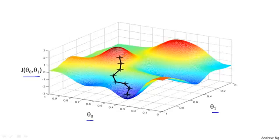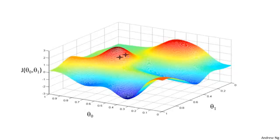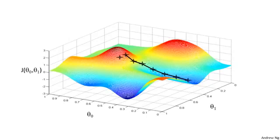Gradient descent has an interesting property. The first time we ran gradient descent, we were starting at this point over here. Now, imagine we had initialized gradient descent just a couple steps to the right — initialized with that point on the upper right. If you were to repeat this process, start from that point, look all around, take a little step in the direction of steepest descent, and so on, gradient descent would have taken you to this second local optimum over on the right. So if you had started at this first point, you would have wound up at this local optimum, but if you started just a little bit in a slightly different location, you would have wound up at a very different local optimum. This is a property of gradient descent that we'll say a little bit more about later.